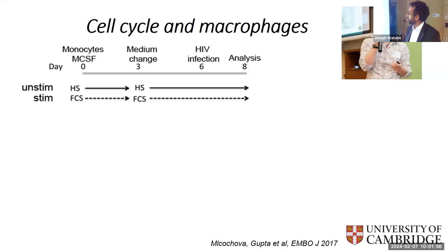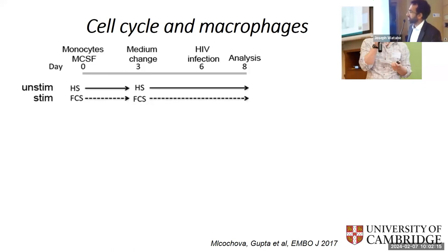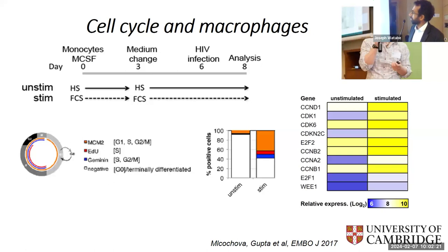Some of our early work revealed that we can actually switch off SAMHD1 — or toggle it — in primary macrophages just by changing the serum we use to culture them. Traditionally most labs use human serum, but some use FCS and people thought this was quite equivalent for many years. We showed that if you use fetal calf serum to culture your macrophages and mature them from monocytes into monocyte-derived macrophages, you actually drive them into the cell cycle. Cell cycle-associated proteins are upregulated.